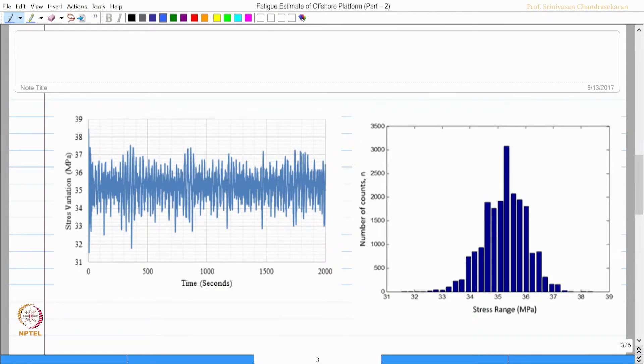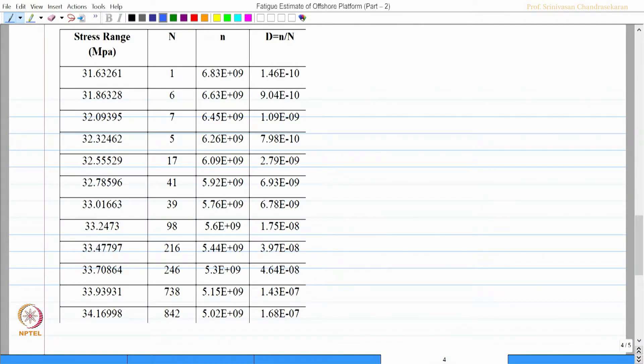This is the typical stress variation which we got for a specific leg. We have taken the record length for our analysis as 2000 seconds. We then plotted the stress range for the number of counts from the figure directly. Once we get this, we are able to get the small n and the capital N value for a specific stress range.